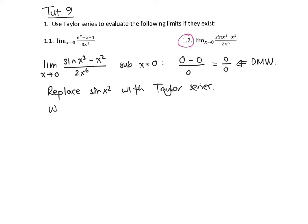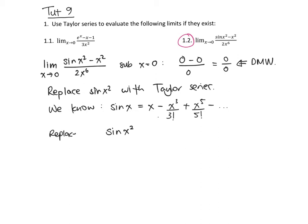So we know — and you should make sure that you do know this for the exam — that sine of x is equal to x minus x cubed over 3 factorial plus x to the fifth over 5 factorial minus, and so on. And so we can find the Taylor series for sine of x squared by replacing every x in our sine of x with an x squared.